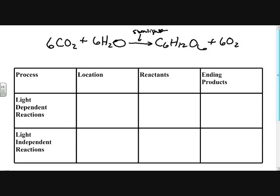So that being the general equation, let's talk about the two parts of photosynthesis. The first part is called the light dependent reactions. The second part is called the light independent reactions. I want you to know three basic things about each reaction: its location, the reactants that go in, and what comes out as the end product.